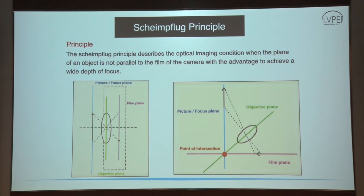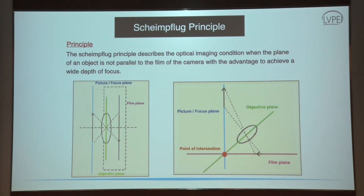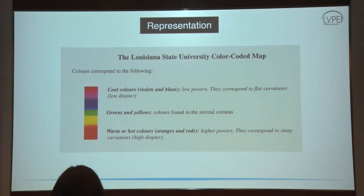The Scheimpflug principle states that if the plane of the object is not parallel to the plane of the film, then the depth of focus is better. That is the entire principle on which Scheimpflug imaging works, and it is essentially a tomographic imaging — capturing corneal thickness, anterior surface, posterior surface, and the relation between the two. These topography maps are represented using the color-coded Louisiana State University system, where cool colors correspond to flatter curvatures and warmer colors to steeper curvatures.